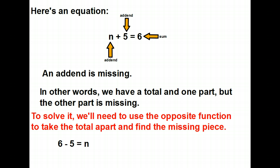What the heck does that mean? Well, here's an equation. Remember earlier we were working with expressions and I told you that expressions are different from equations because expressions don't have an equal sign. Well, an equation does. And in this case, we're looking at the equation n plus 5 equals 6. n's an addend, 5's an addend, 6 is a sum.